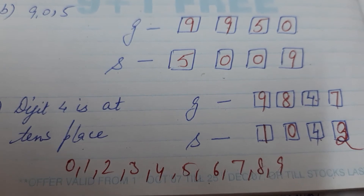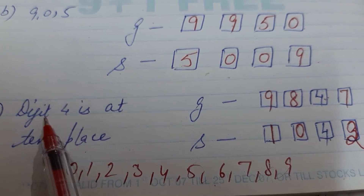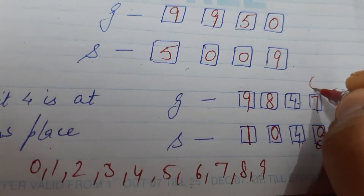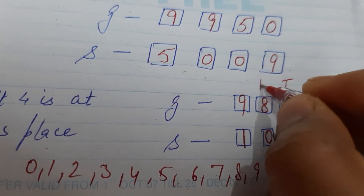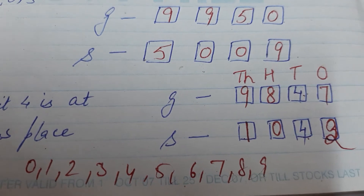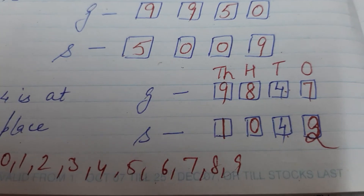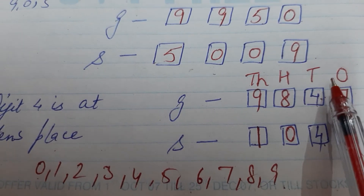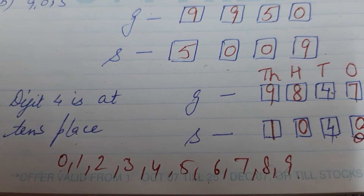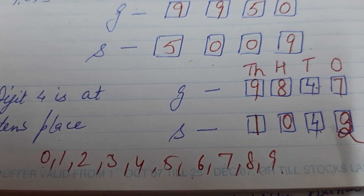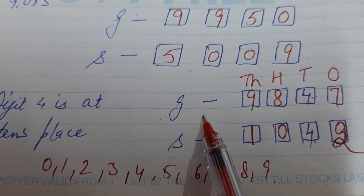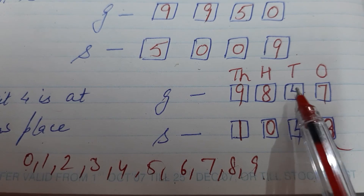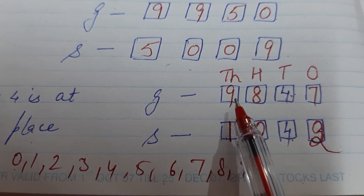Next, if a condition is given that digit 4 is at the tens place: first write down the places — ones, tens, hundreds, and thousands. We have all digits from 0 to 9, and digit 4 is fixed at the tens place. For the greatest number, I will write 9 at thousands, 8 at hundreds, 4 is already at tens, and then 7 at ones. So it becomes 9847.